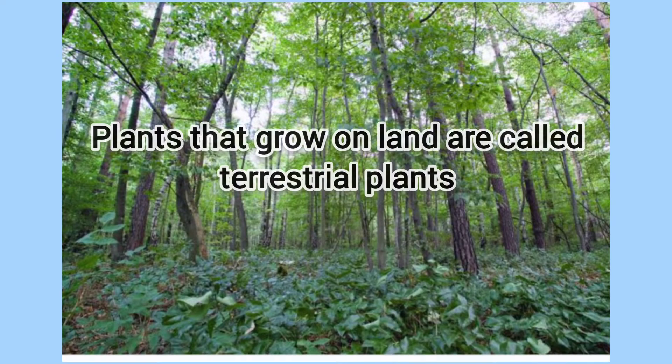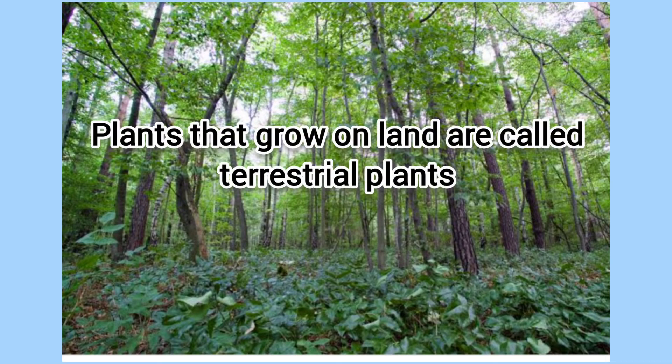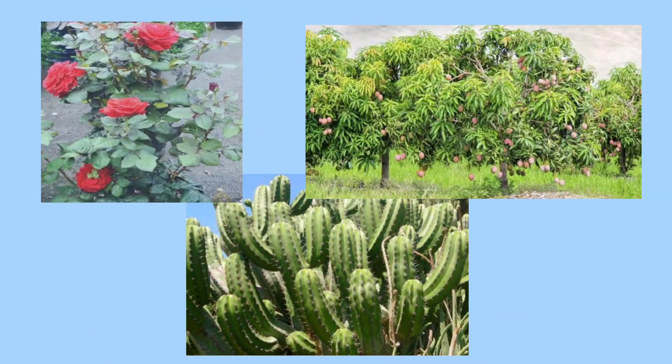Plants that grow on land are called terrestrial plants. Mango tree, rose shrub, watermelon, and cactus are some examples of terrestrial plants.